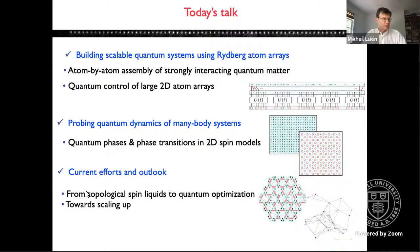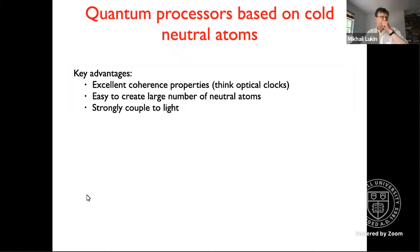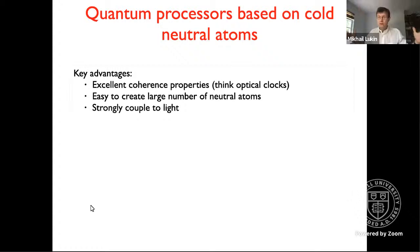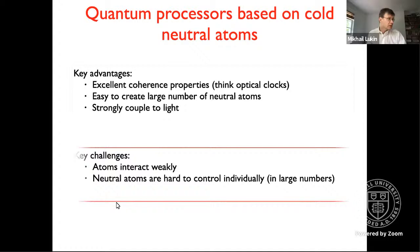In our approach, we build quantum processors using individual neutral atoms. We pick this system because these atoms have truly excellent coherence properties — they can be considered the best nature-made qubits in terms of isolation. It is easy to create a large number of these atoms. However, there are also challenges: atoms in the gas phase interact very quickly with each other, and neutral atoms are very hard to control individually, at least in large numbers.